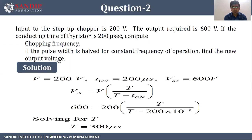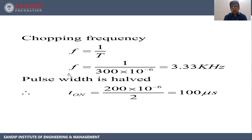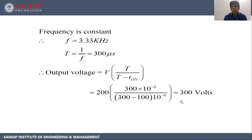Now, if the pulse width is halved at constant frequency of operation, find the new output voltage. If T_on was 200 microseconds, halving it gives T_on as 100 microseconds. Frequency remains the same at 3.33 kilohertz, so T remains 300 microseconds. Output voltage equals V into T by T minus T_on, which gives 200 into 300 divided by 300 minus 100, giving output voltage as 300 volts.